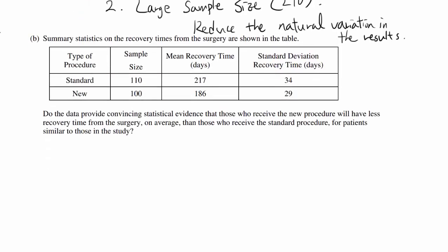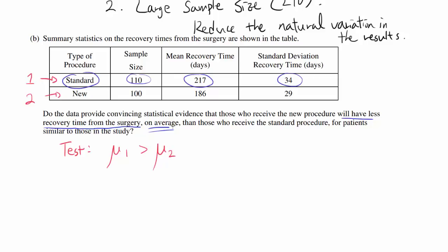Let's go on to part B. Summary statistics on the recovery times from the surgery are shown in the table — for each procedure, we are given the sample size, mean recovery time in days, and standard deviation of recovery time in days. We'll label the standard procedure as procedure 1 and the new procedure as procedure 2. We want to test whether the mean of the first one is greater than the mean of the second one, because we want to see if the second one has less recovery time.